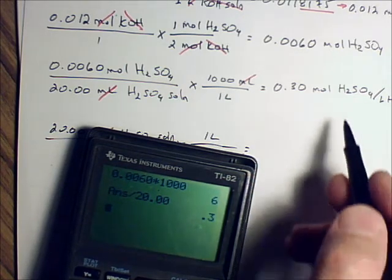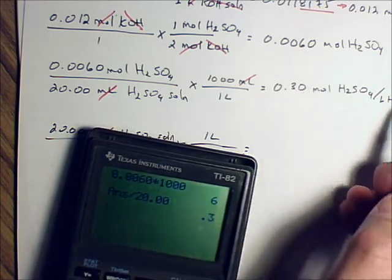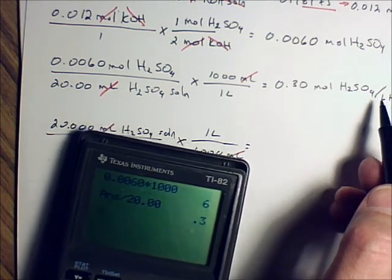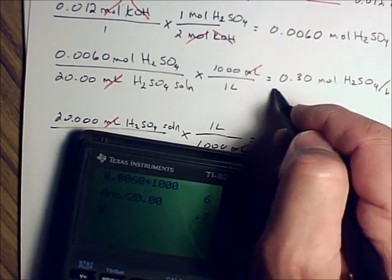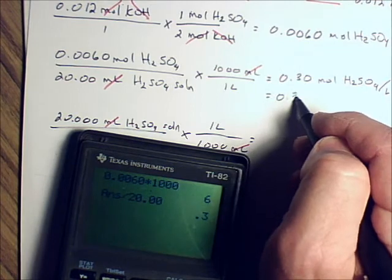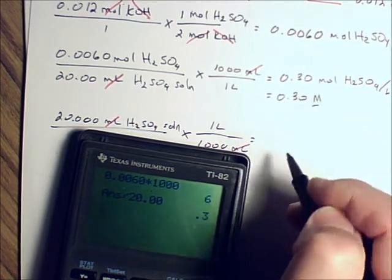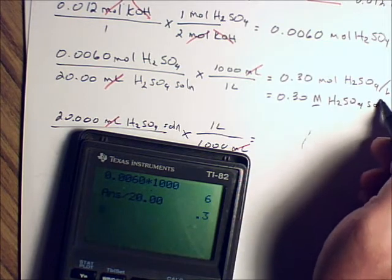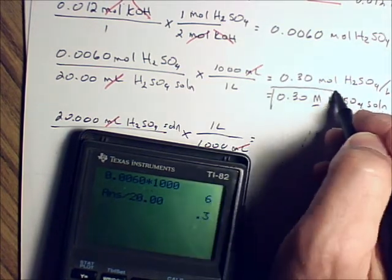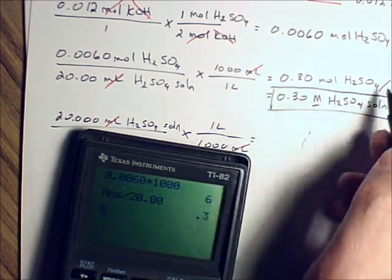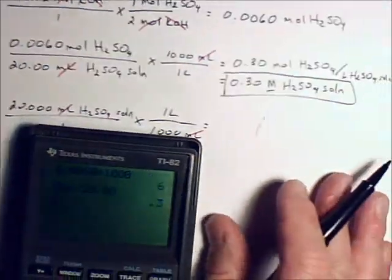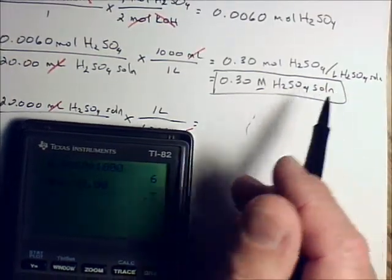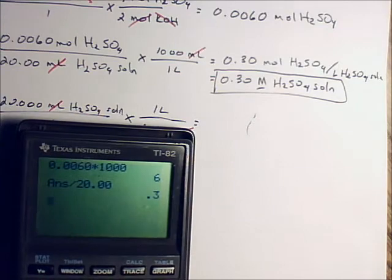And that's moles H2SO4 over liters H2SO4 solution. Now, that's kind of a big complex fraction that we could simply write as 0.30 molar H2SO4 solution. And although it's not required, either one of these answers is correct, this is actually preferred.